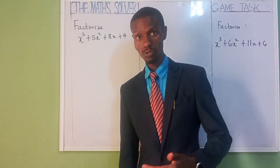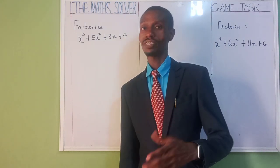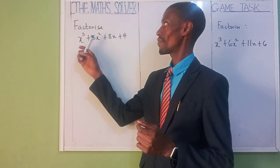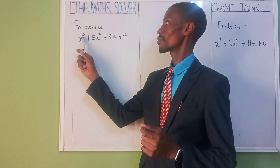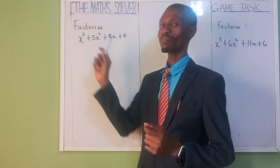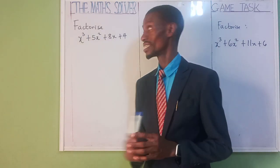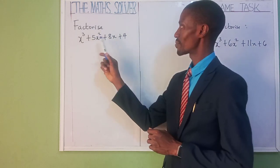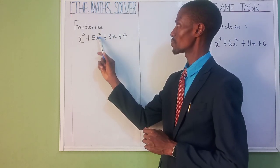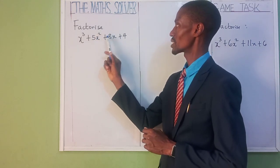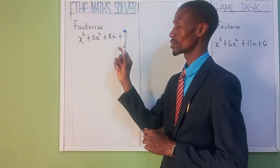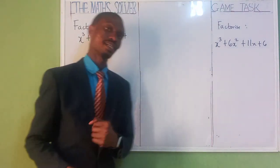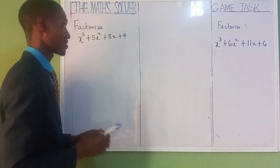You must have been so used to factorization of quadratic. Now, how do we factorize this polynomial? You can see x to the power of 3, plus 5x to the power of 2, plus 8x plus 4. How do we factorize it? Very simple — let's solve it together.